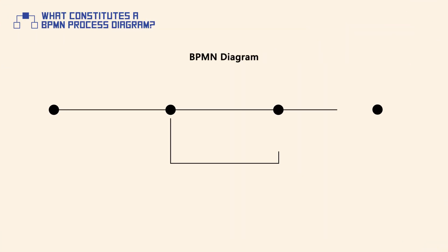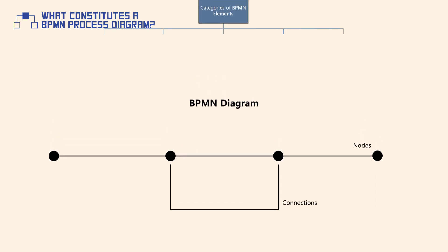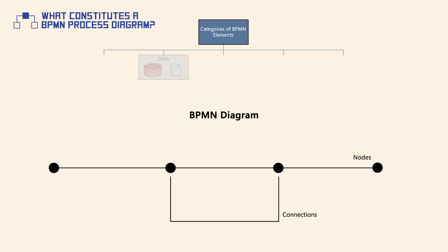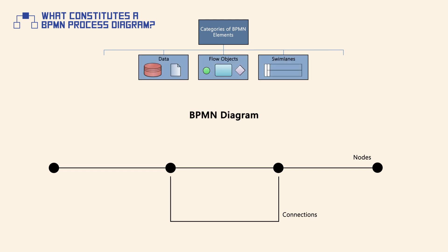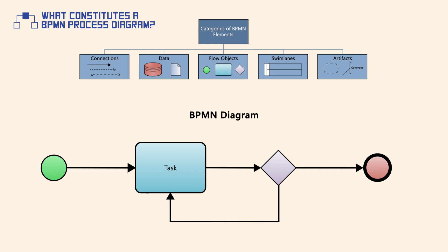BPMN diagrams consist of two main types of elements: nodes and connections. In BPMN 2.0, nodes are represented with flow objects, swim lanes, and artifacts, whereas connections are represented with connecting objects.